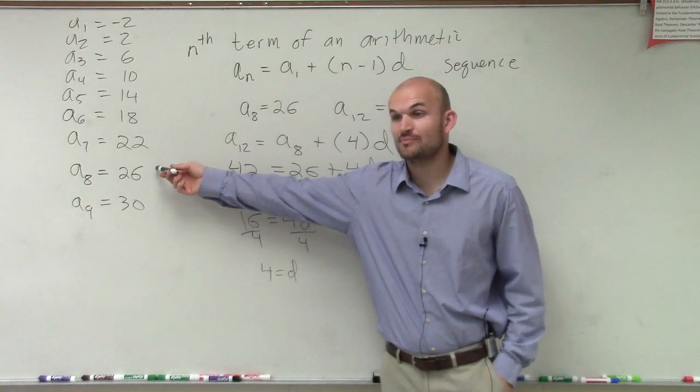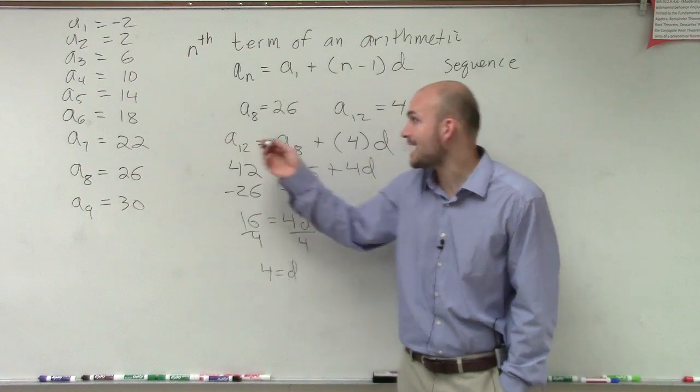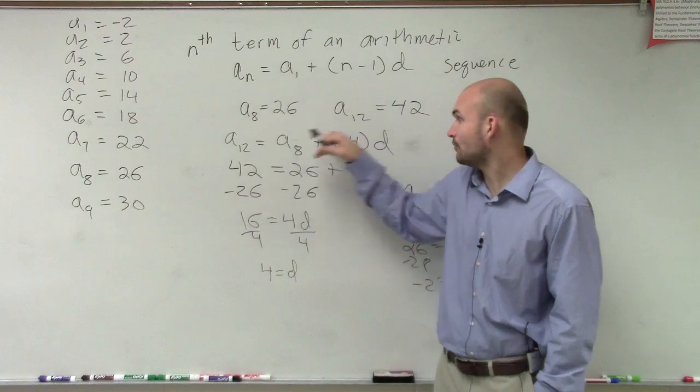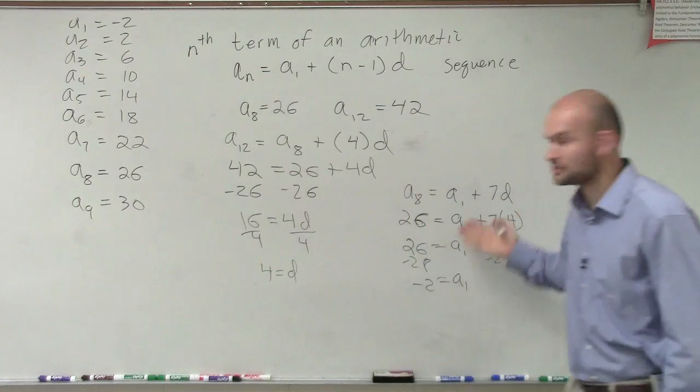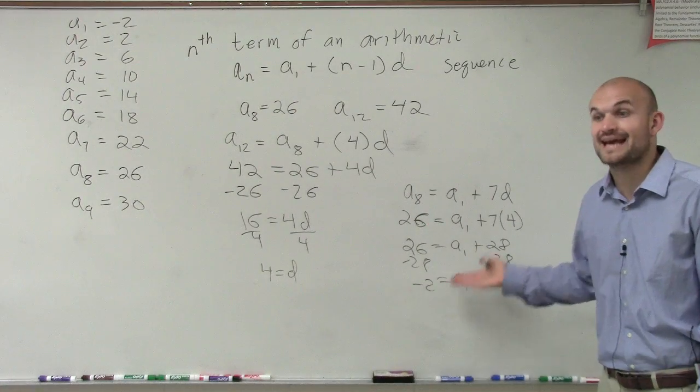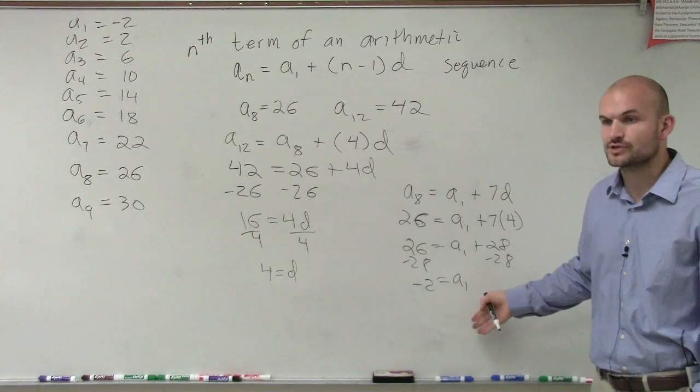But this way simpler, you're right. But what if I said find the first five terms and I give you a sub 81 and a sub 92? You're not going to want to keep on going all the way backwards down to a sub 1, right? So you need to understand you can apply this formula back again to find your original first term.